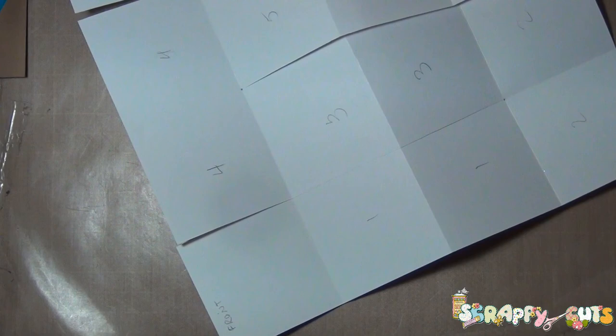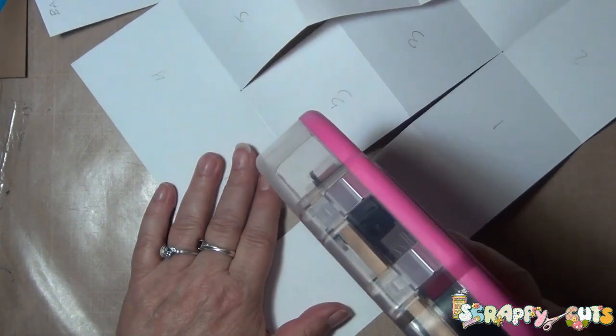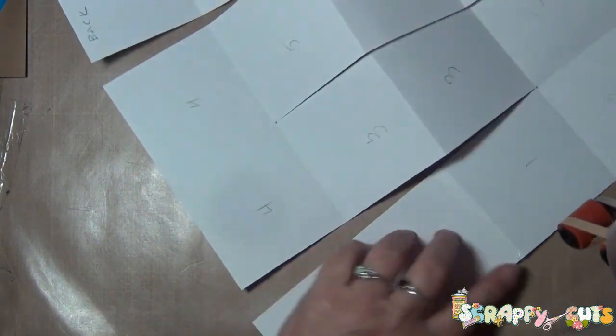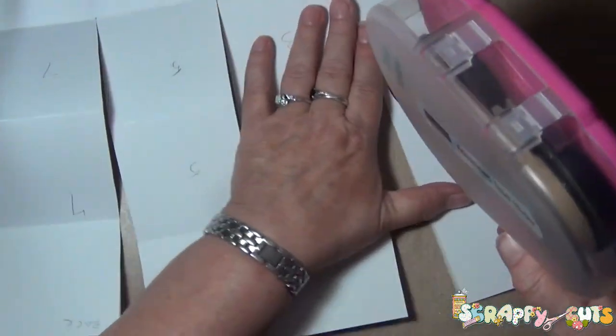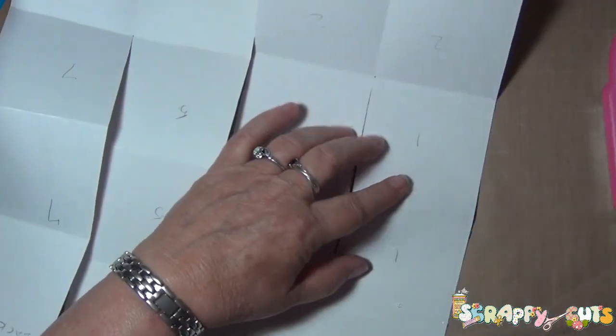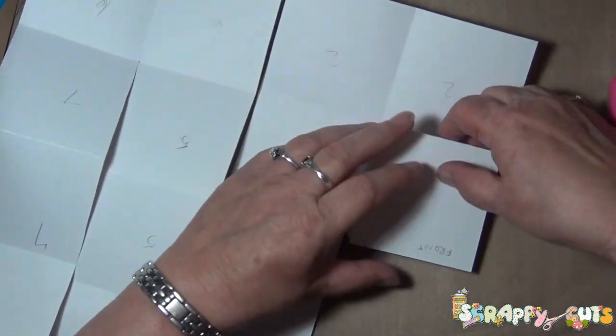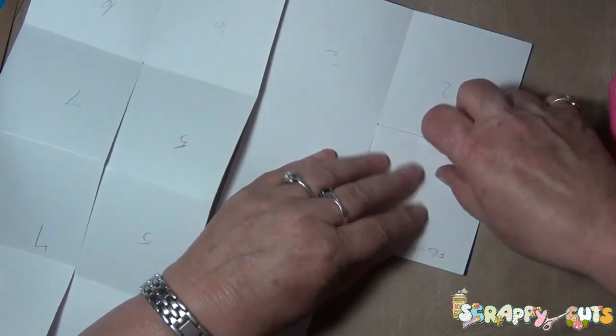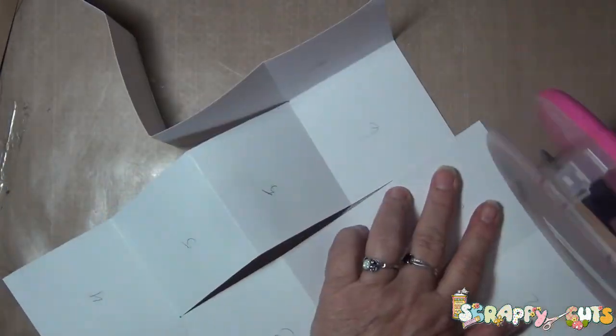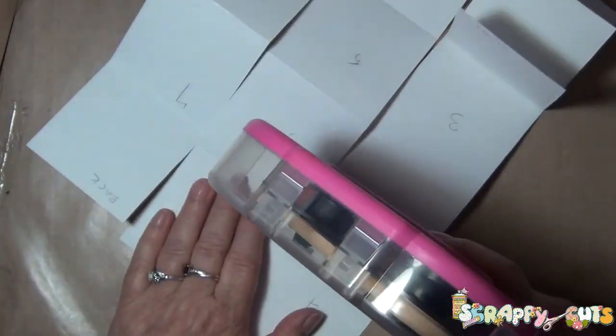The book will go together very easily if you remember to always put the numbers together. So the one is going to be adhered to the other one. And I just use my ATG gun. It seems to work just fine. And I try to get all of the edges so that the edges do not have any place for things to get hung up in the pages. Okay, so I've got the one adhered. Now I'm going to fold over the other one so it meets. The front page and the last page are on a single square and those pages will attach to the binding of the book.